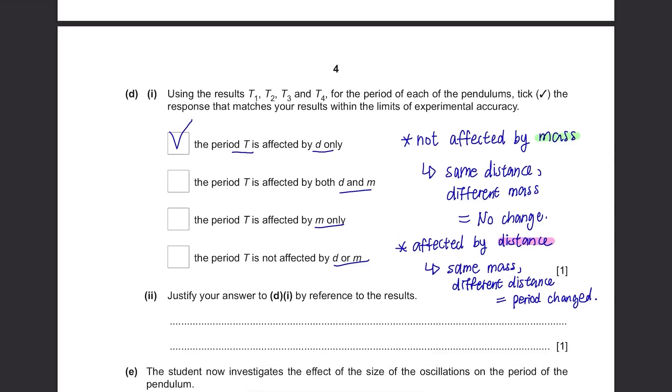Justify your answer to d1 by reference to the results. I just explained this. When the mass was both 109 grams but the distance was increased from 50 cm to 100 cm, the period changed from 1.39 seconds to 2.02 seconds.